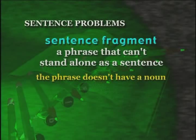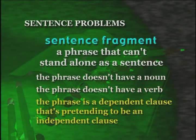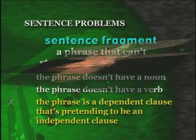One, it might be because the phrase doesn't have a noun. Two, it may be because the phrase doesn't have a verb. Or three, your phrase may be a dependent clause that's pretending to be an independent clause. Whichever one of these it is, you've got a sentence fragment on your hands.